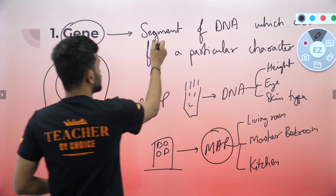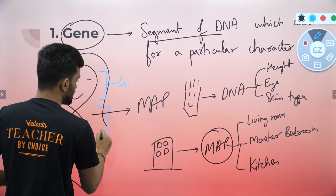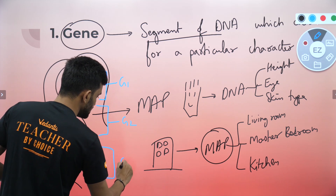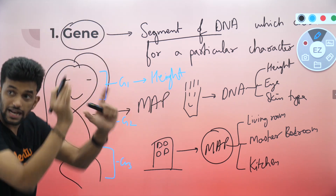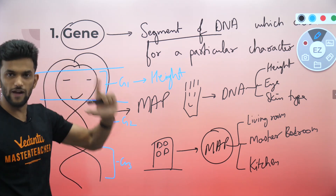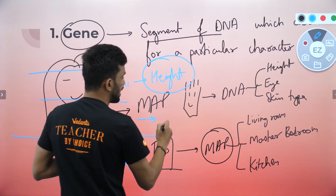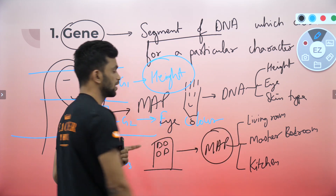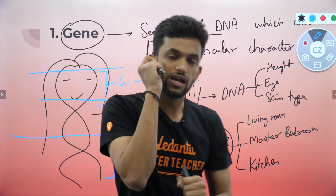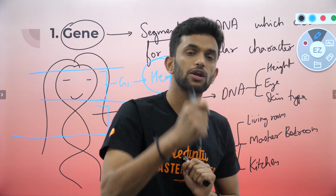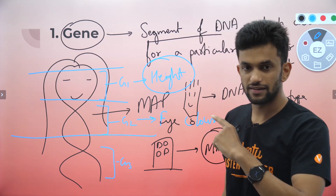So I can say this is gene one, this is gene two, this is gene three. This gene is for my height — this part of my DNA acts as a map for my height, and this part acts as a map for my eye color. That is what a gene is: a segment of DNA which codes for a particular character. This character could be height, eye color, or anything else.